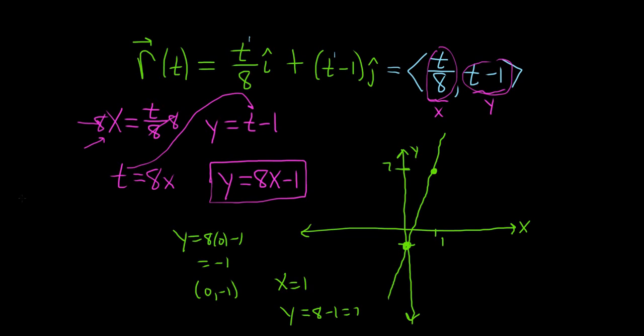So let me show you how to find that. To find the orientation, I like to make a little table. So we have t, then we have x, and then we have y. And you can think of your x as this piece here, t over 8. And your y is t minus 1, right?